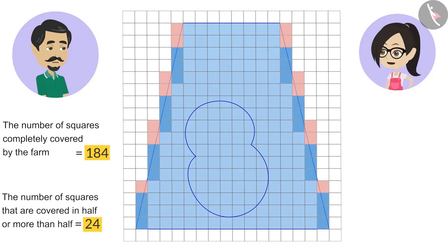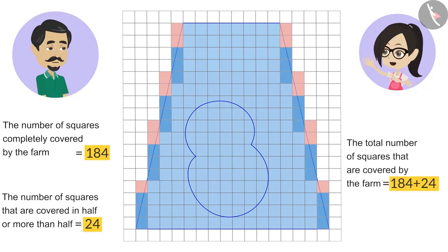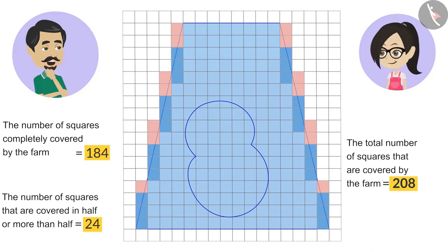That means the farm has covered almost 184 plus 24 squares. Therefore, this farm covered almost 208 squares. It looks like this.